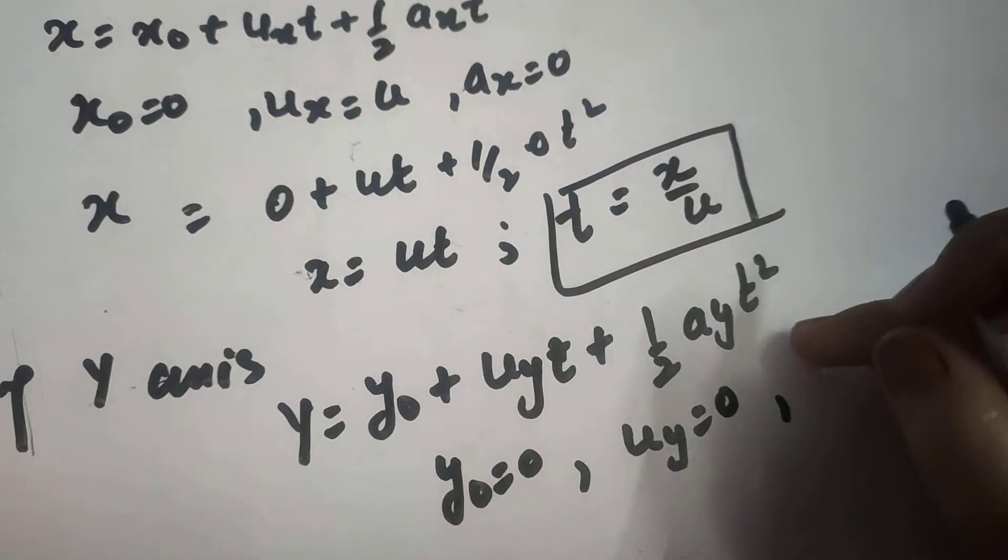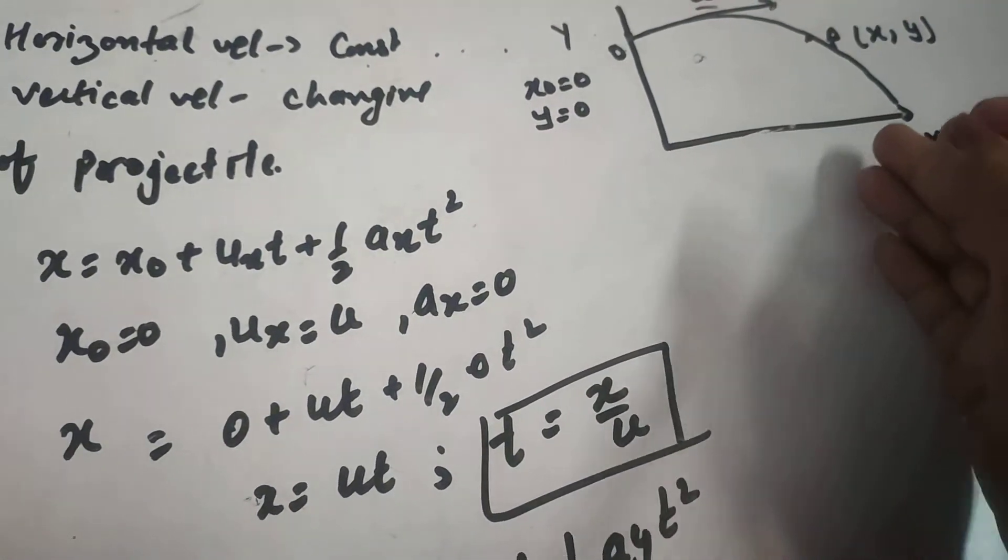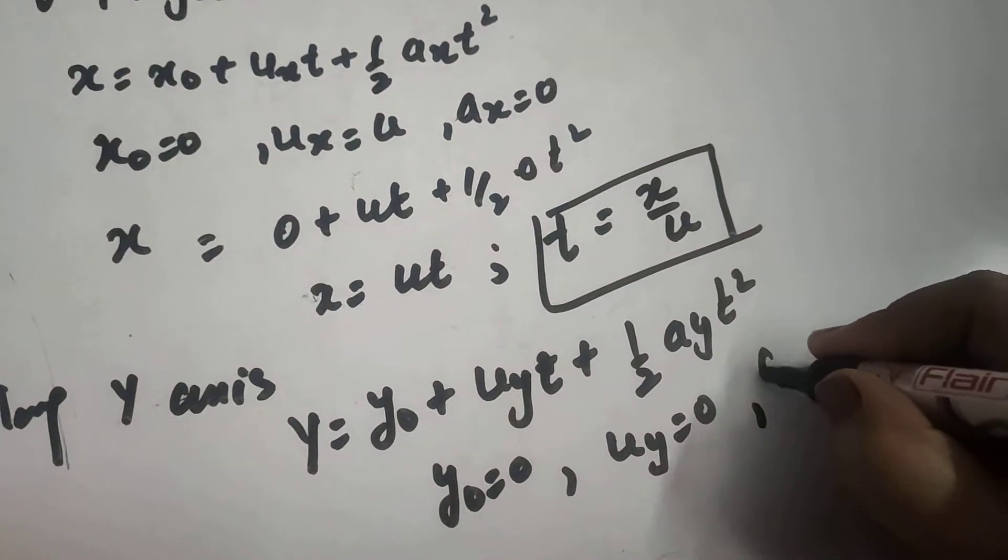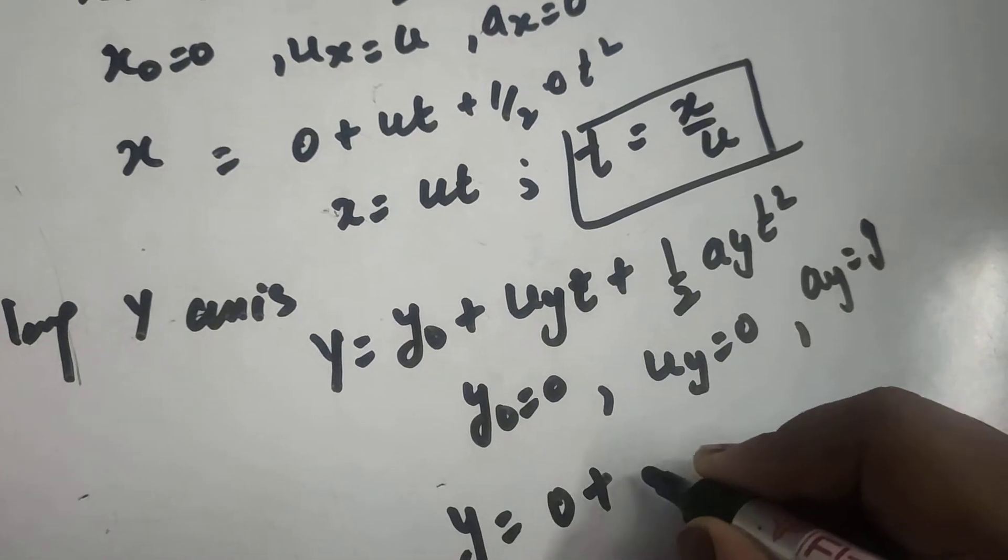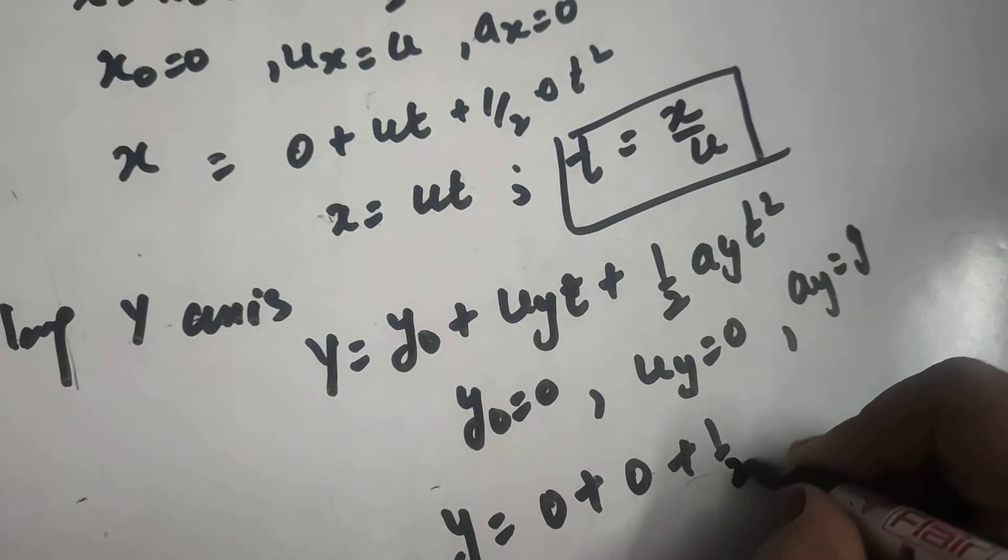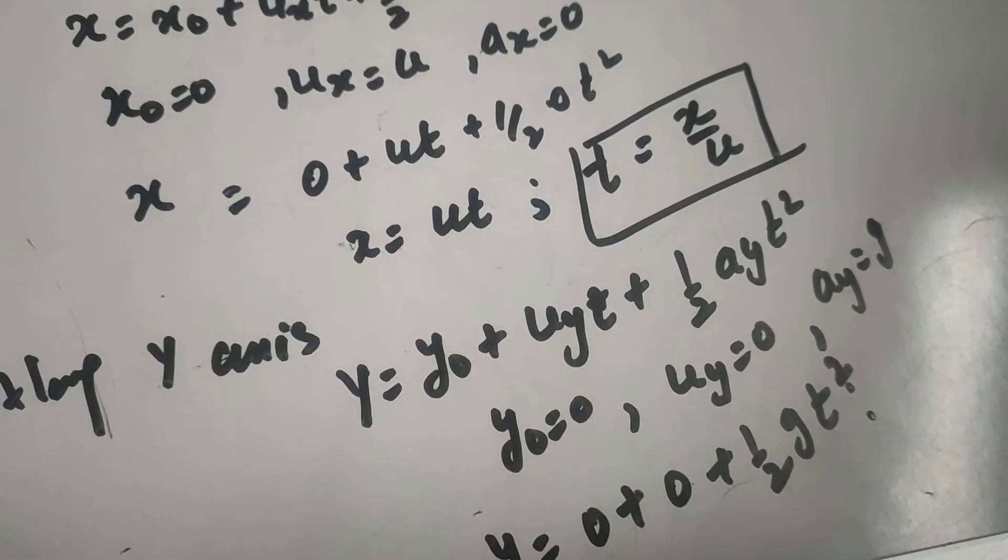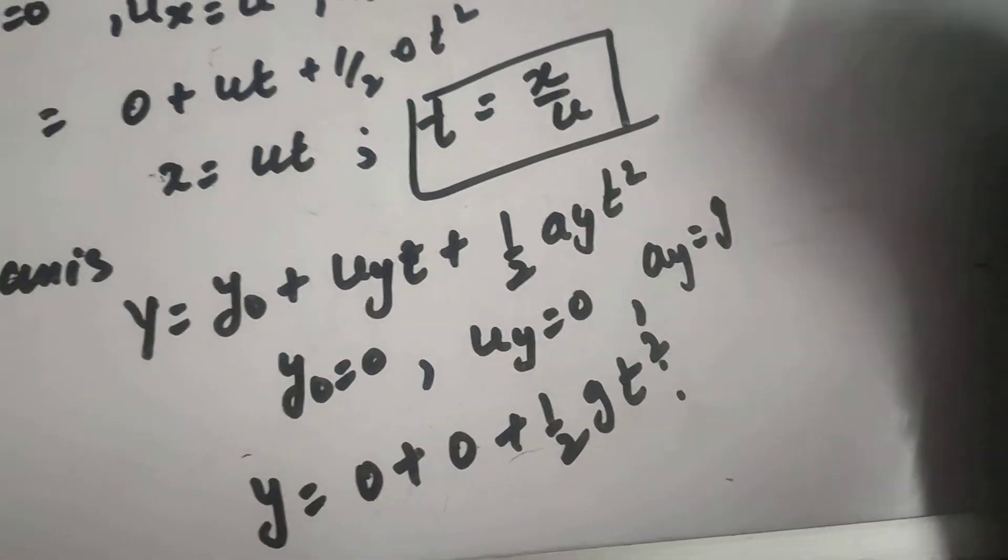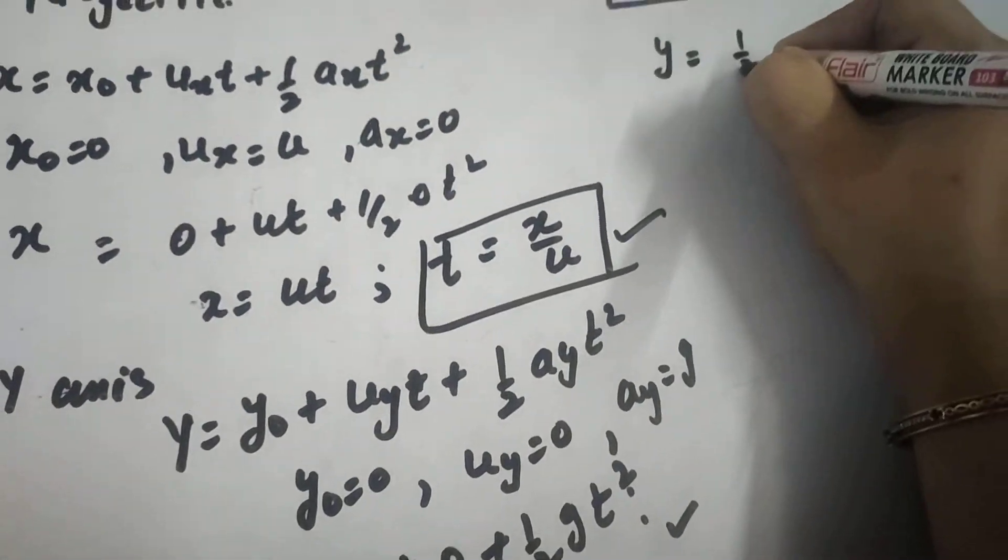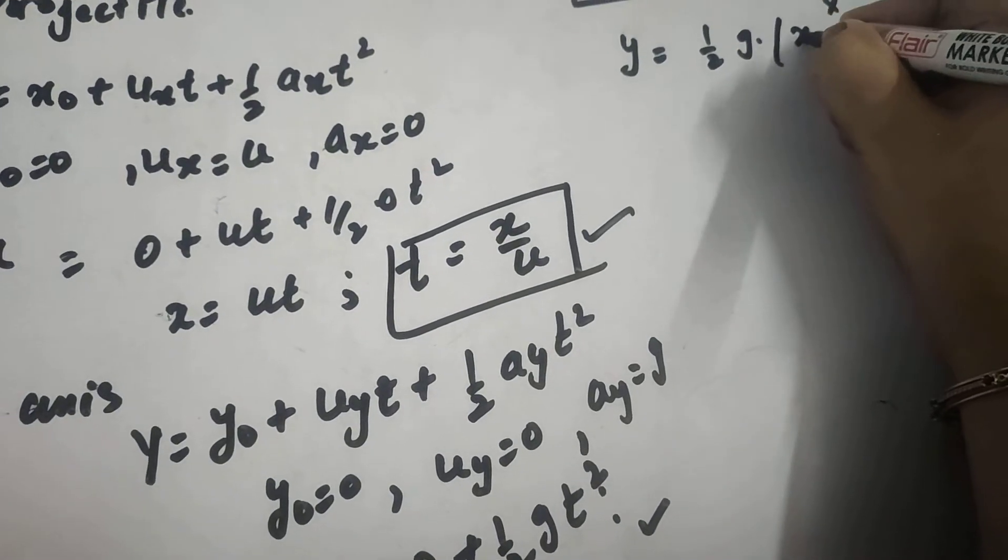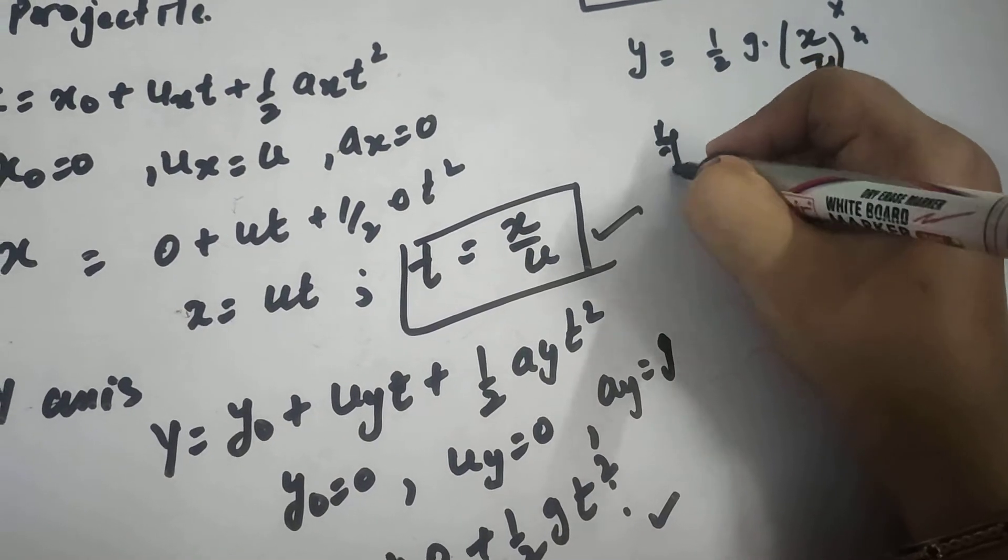AY now, since AY is acceleration of the particle in the Y motion which is due to gravity, so AY equals G. Putting this value, Y equals 0 plus 0 plus half G·T². Now putting T from this in this equation, we will get Y equals 1 by 2 G times (X by U) whole square. In this case we can again change it to Y equals G/(2U²) times X².